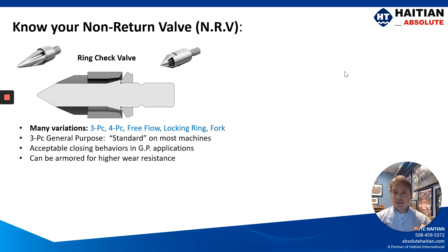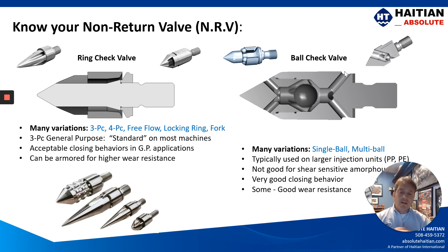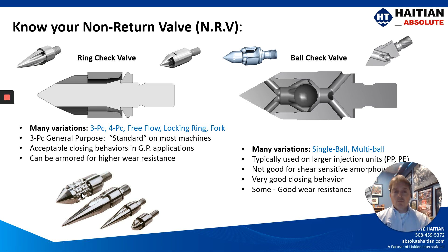For non-return valves, a typical machine will use a three-piece non-return valve, though four-piece, free flow, and locking valves are also available with acceptable closing behaviors — all can be armored for your screw geometry and barrel configuration. You also have ball check valves: single ball check and sometimes multi-ball check on larger tonnage machines running polypropylene and polyethylene. These are not good for shear-sensitive amorphous materials but have very good closing behavior. It's important to evaluate your materials and process, and have that discussion with your material supplier and machine supplier to pick the right non-return valve.